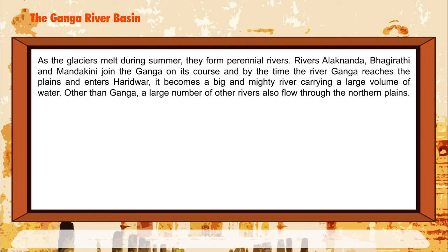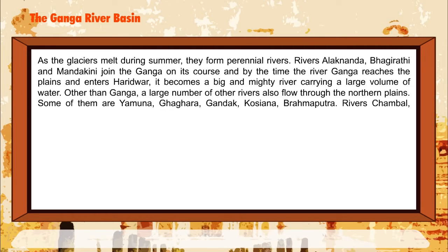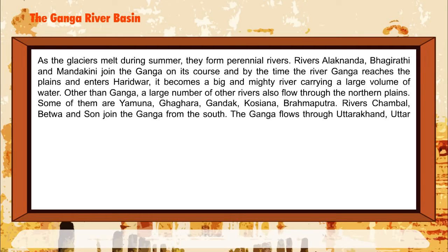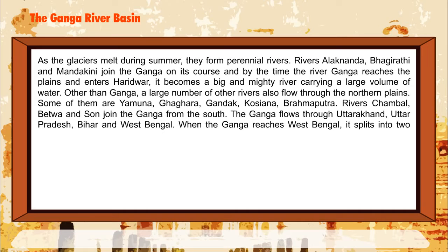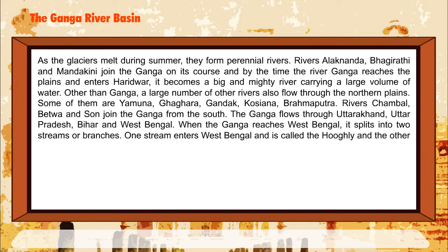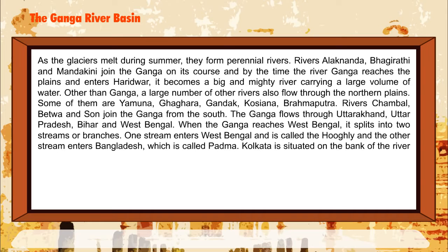Other than the Ganga, a large number of rivers also flow through the Northern Plains. Some of them are Yamuna, Ghaghra, Gandak, Kosi, and Brahmaputra. Rivers Chambal, Betwa, and Son join the Ganga from the south. The Ganga flows through Uttarakhand, Uttar Pradesh, Bihar, and West Bengal. When the Ganga reaches West Bengal, it splits into two branches. One stream enters West Bengal and is called the Hooghly, and the other stream enters Bangladesh, where it is called the Padma.